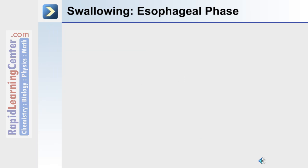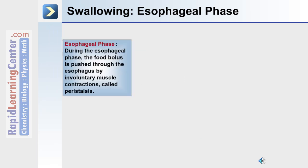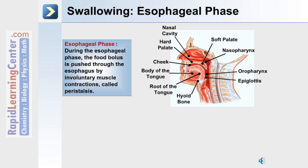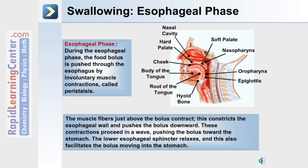Once the food bolus moves into the esophagus, the esophageal phase begins. During this phase, the food bolus is pushed through the esophagus towards the stomach by contractions known as peristalsis. The muscle fibers just above the bolus contract, constricting the esophageal wall and pushing the bolus downward. These contractions proceed in a wave, pushing the bolus towards the stomach, until the lower esophageal sphincter relaxes and facilitates the bolus moving into the stomach.